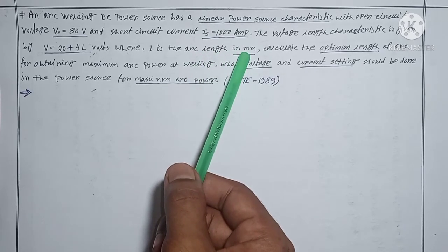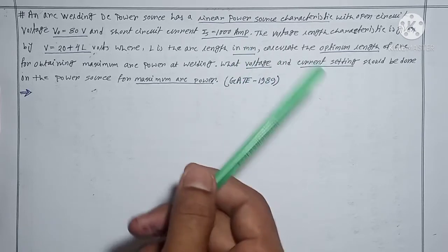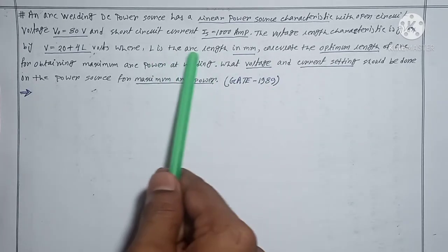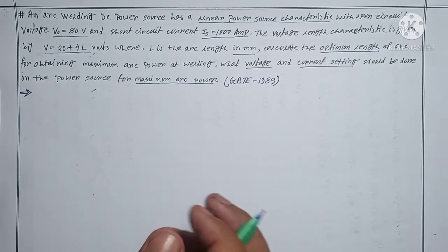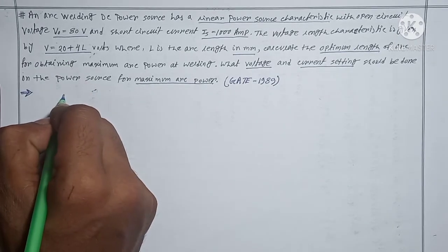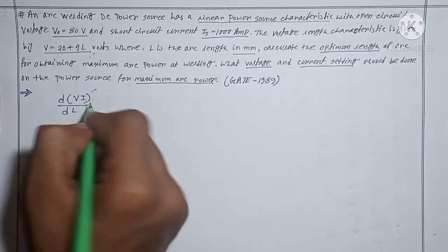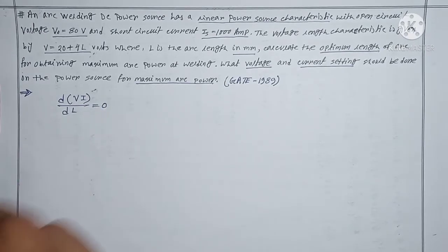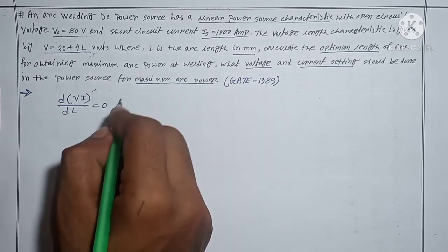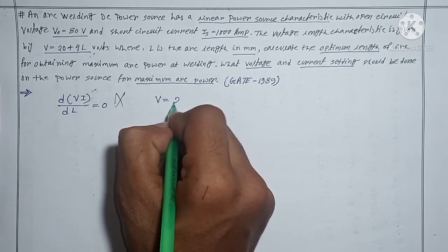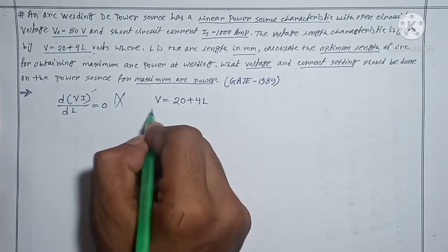Be careful about unit conversion for arc length when solving these questions. You can solve this kind of question by differentiating power with respect to arc length and equating to zero to find the optimum length — but that is not required. Very easily, we know the arc length characteristic: v = 20 + 4l.